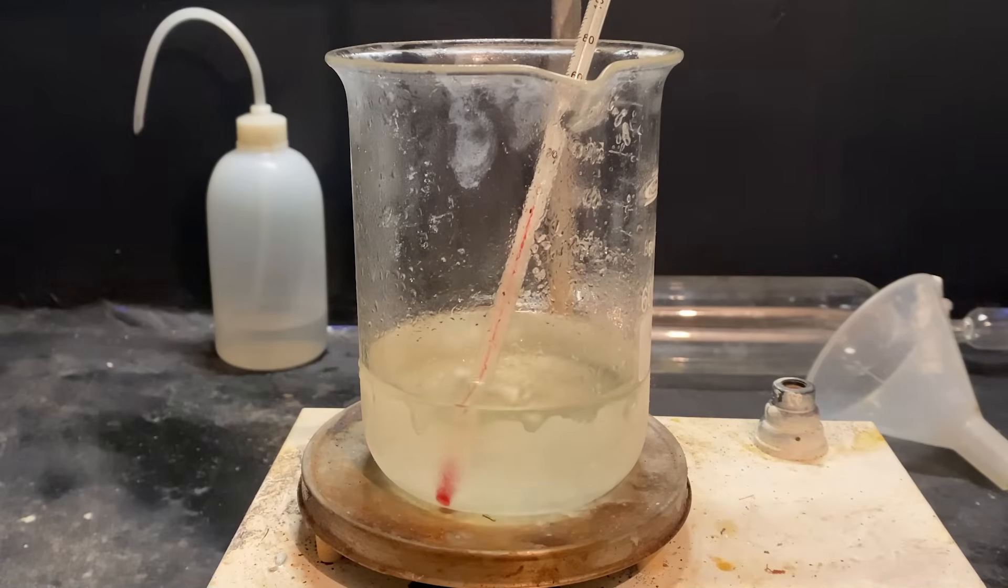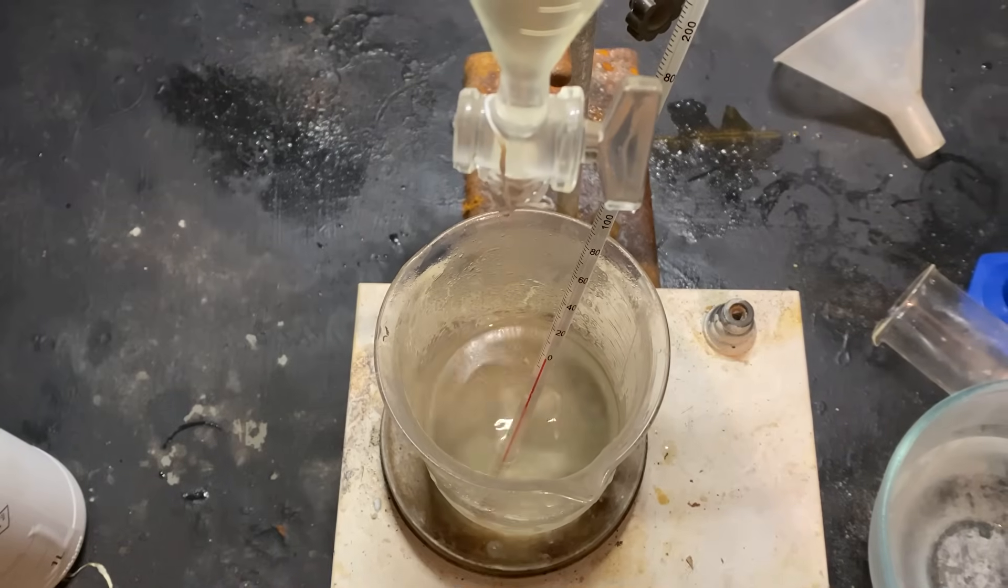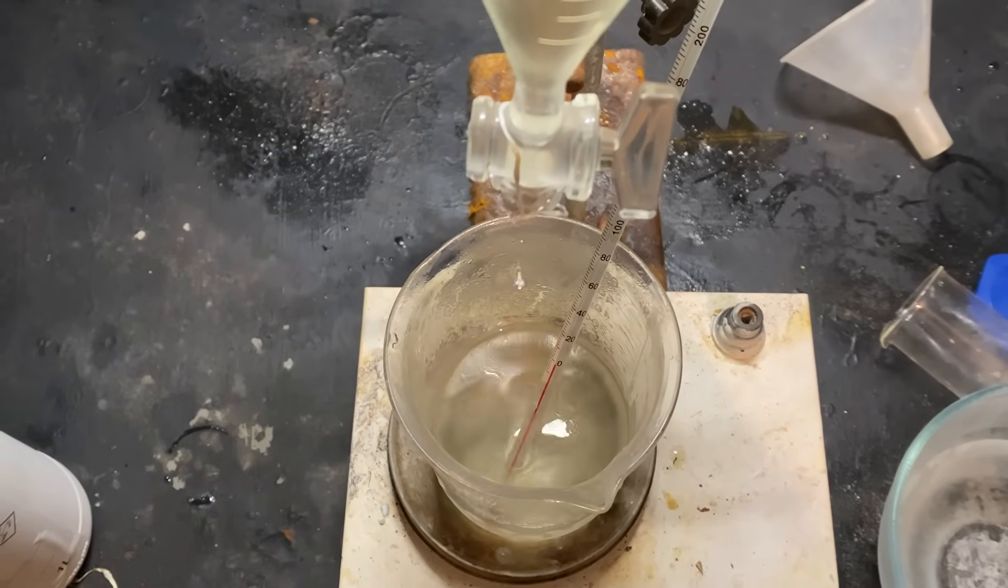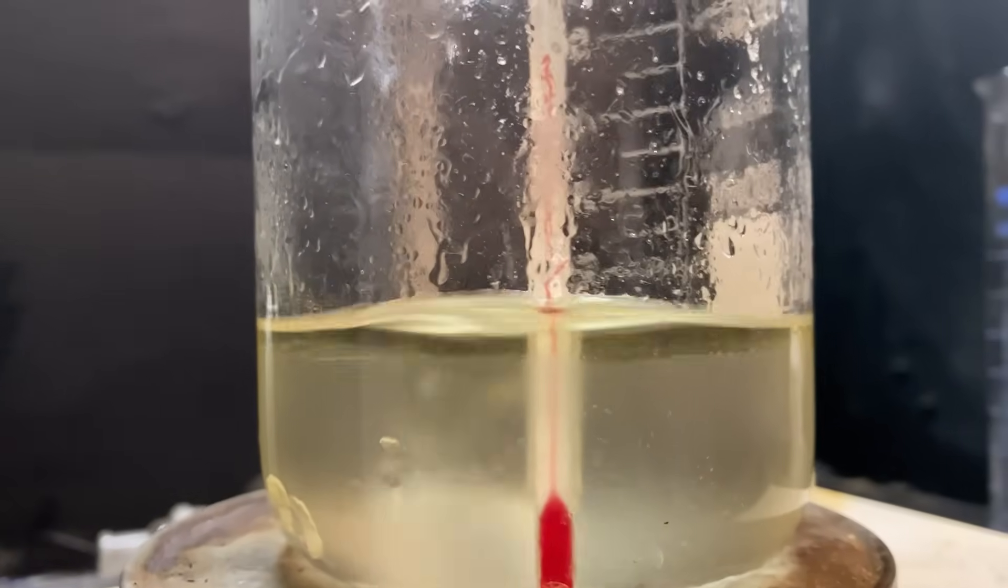Then, I've turned on moderate stirring, and I started dripping in hydrochloric acid. At first, it doesn't seem like anything is happening, but just after around 5 minutes of addition, you can already see a layer of isopropyl nitrite forming at the top.